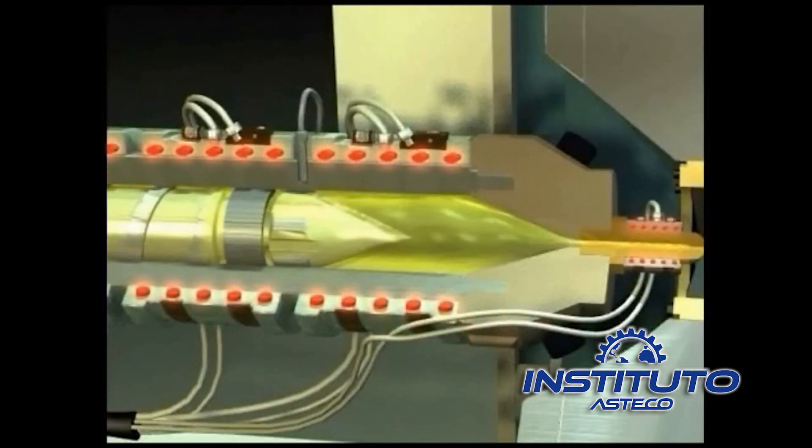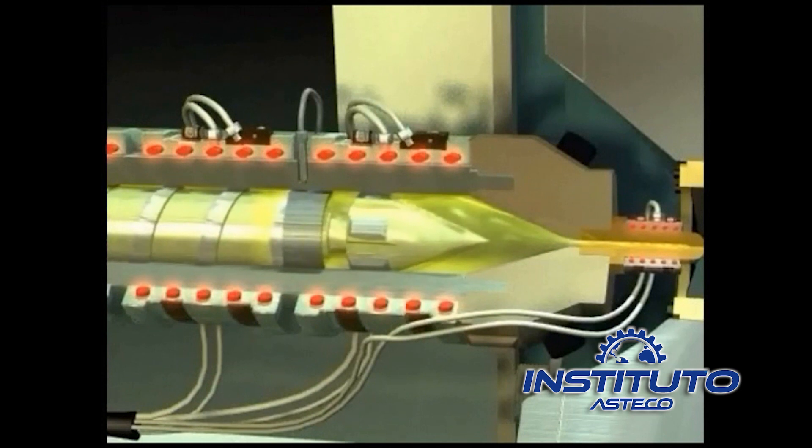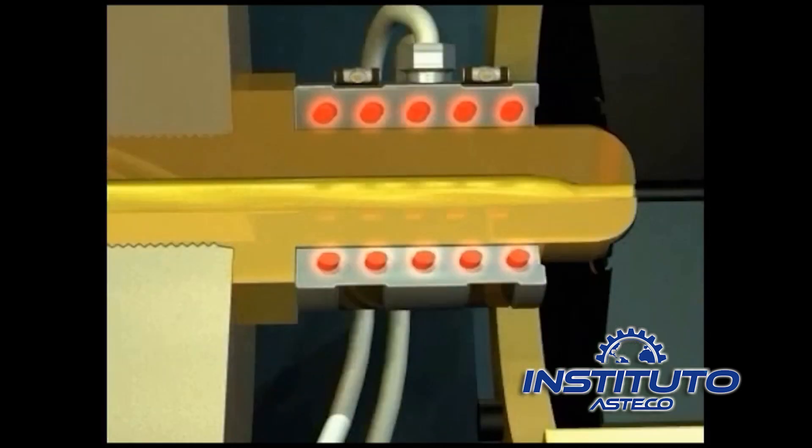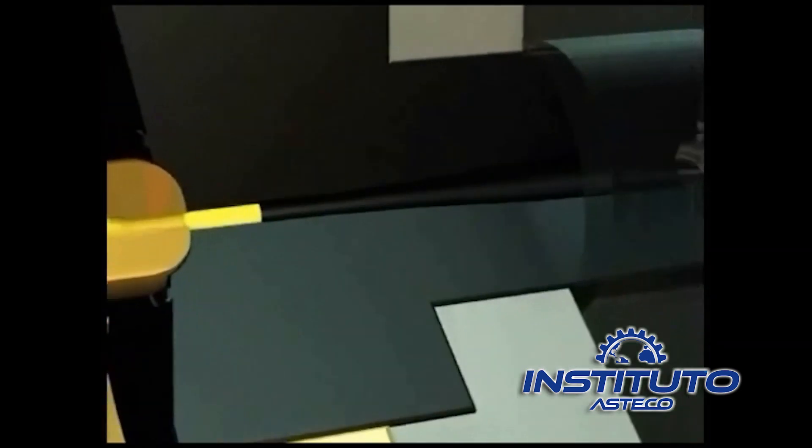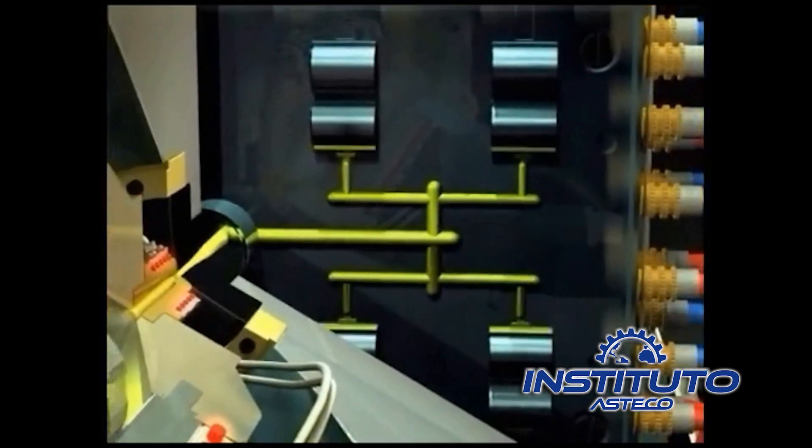Then the screw, acting as a plunger, pushes the melted plastic out of the injection barrel, through the nozzle, sprue, runners, gates, and on into the mold cavities.